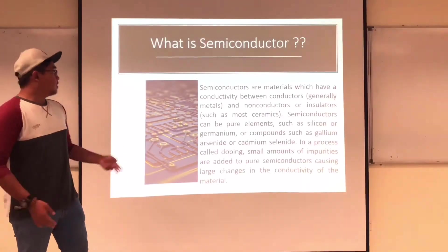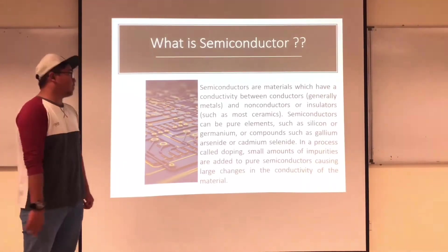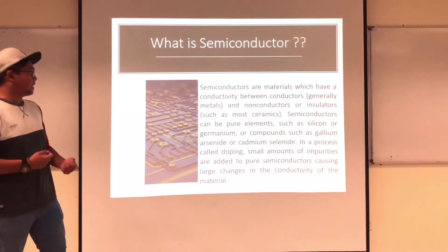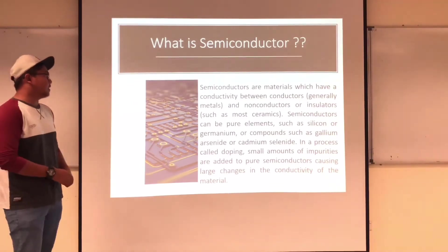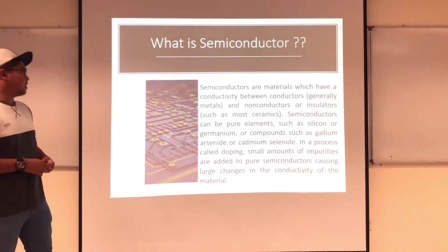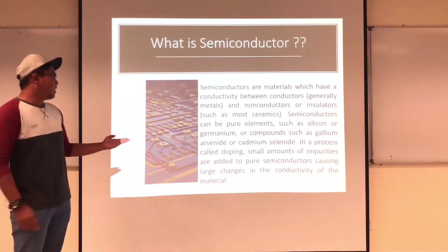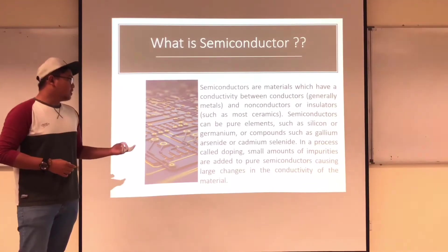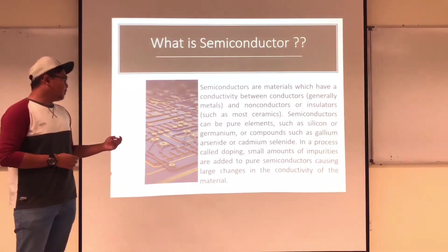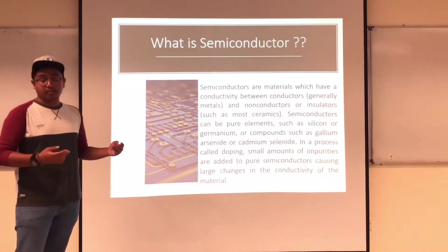What is a semiconductor? Semiconductors are materials which have a conductivity between conductors, generally metals, and non-conductors or insulators. Semiconductors can be pure elements such as silicon or germanium, or compounds such as gallium arsenide. In a process called doping, small amounts of impurities are added to pure semiconductors, causing large changes in the conductivity of the material.